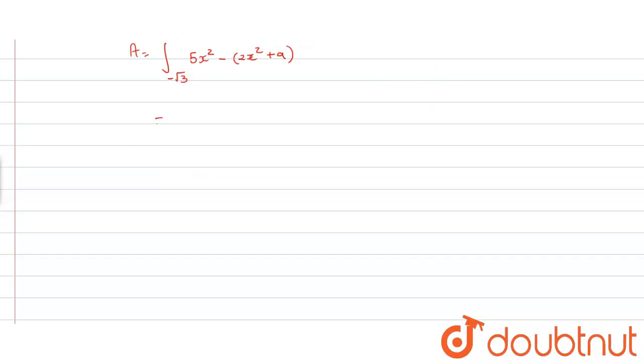This can be written as ∫_{-√3}^{√3} (3x² - 9) dx, which equals ∫_{-√3}^{√3} 3x² dx - ∫_{-√3}^{√3} 9 dx.